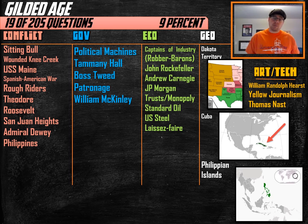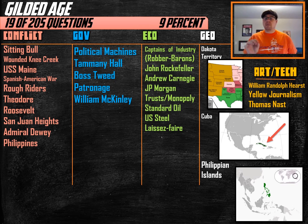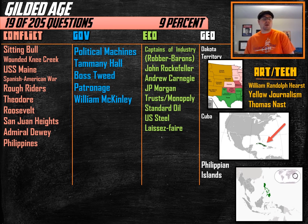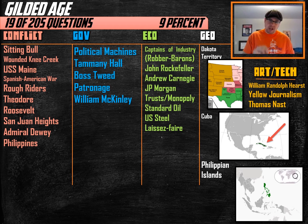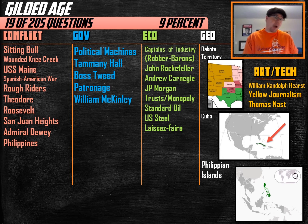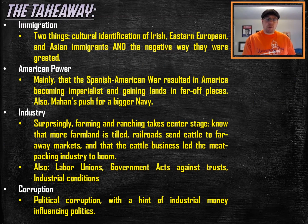Hey historians, welcome to Decoding the Test. We're going to take a look today at the Gilded Age, but keep in mind this is not everything I would want you to know about this era. Instead, it's a look at what the test has focused on in the past to help you laser in on what they have decided is really important. If you want to focus in, we can really focus on four areas the test comes back to over and over again: immigration, American power, industry, and corruption.